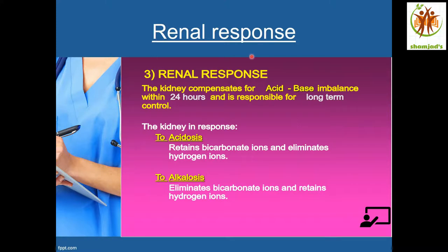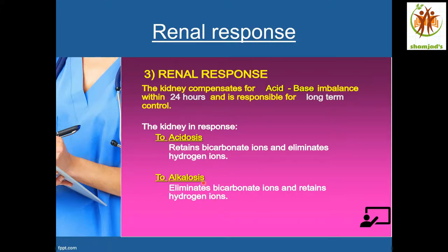Renal response: the kidney compensates for acid-base imbalance within 24 hours and is responsible for long-term control. In acidosis, the kidney retains bicarbonate ions and eliminates hydrogen ions. As hydrogen ions are excreted and bicarbonate is retained, the bicarbonate level in the blood rises and hydrogen ions decrease. In alkalosis, the kidney eliminates more bicarbonate and retains hydrogen ions. The kidney retains the acid and excretes the bicarbonate, and this acid goes and neutralizes the alkalosis.